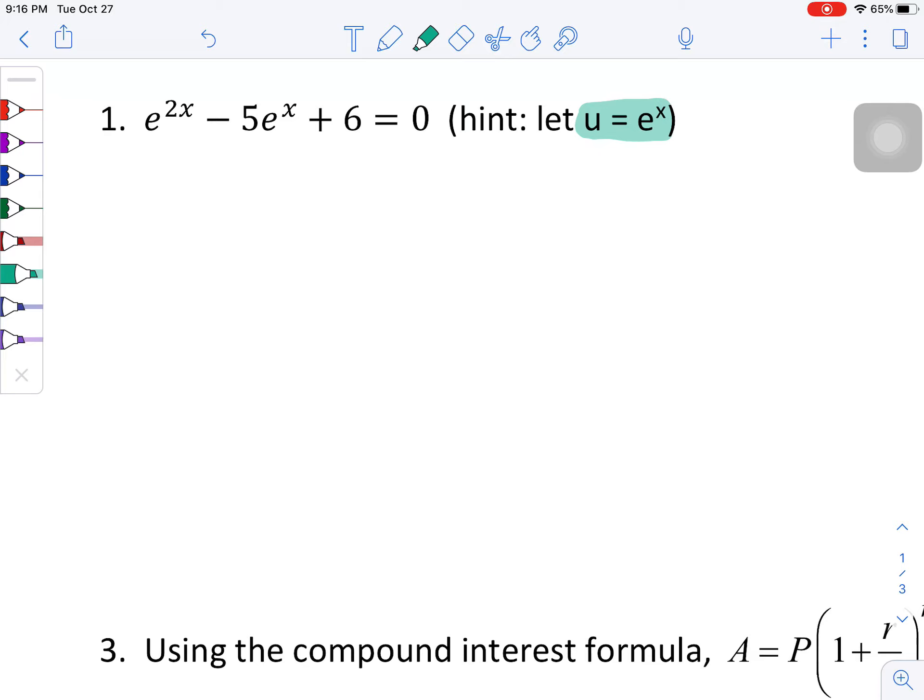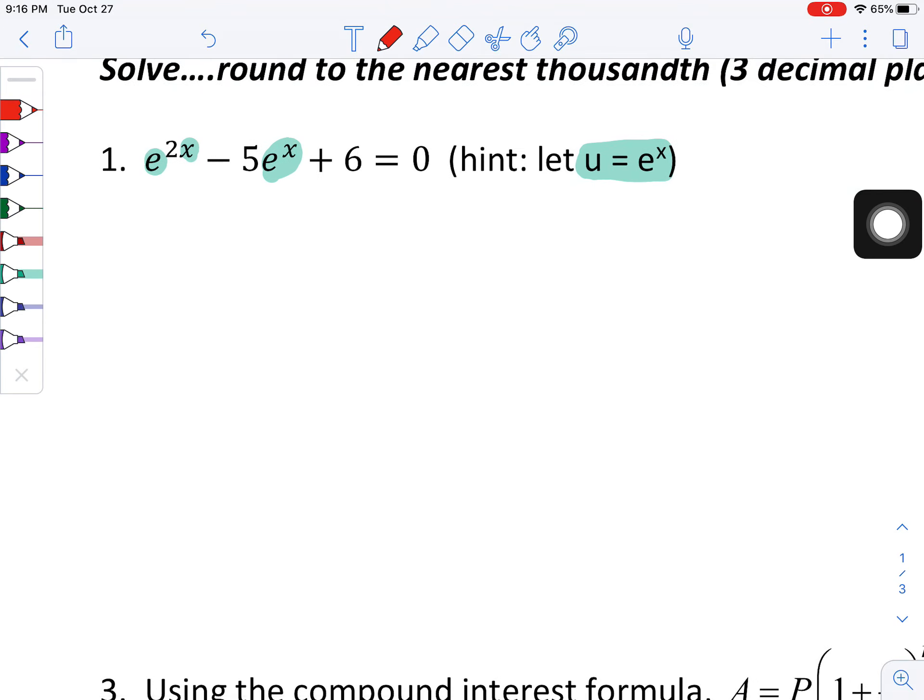So I see an e to the x right here, and while it's difficult to see, there is an e to the x right here. In fact, it's e to the x squared. So if you think about your exponent rules, if you had e to the x raised to the second power, you would just multiply those two exponents together, creating the 2x.